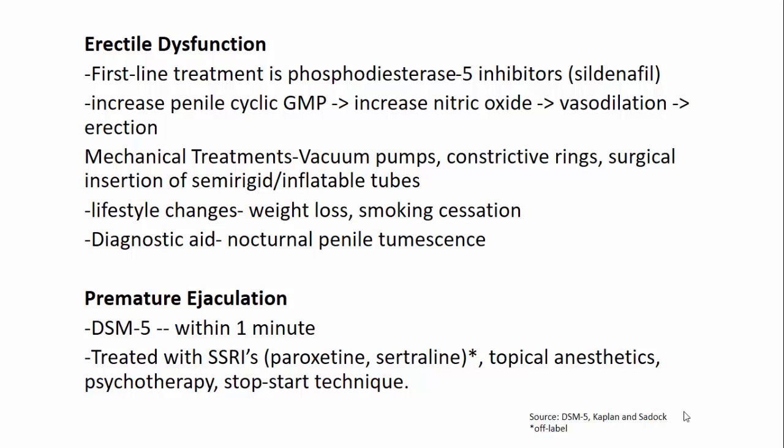Premature ejaculation is defined by the DSM-5 as occurring within one minute of initiation of sexual intercourse — an important distinction, as patients may complain of this after longer than a minute. We treat premature ejaculation with the stop-start technique, SSRIs such as paroxetine and sertraline in off-label uses, topical anesthetics, and psychotherapy. Paroxetine and sertraline carry the side effect of delaying ejaculation or reducing pleasure in sexual activity, so we're using the side effect to treat the disorder.